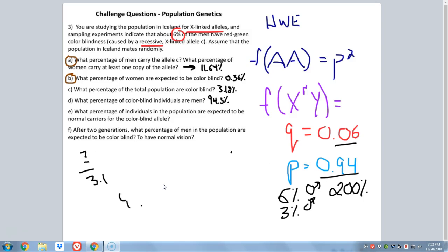What percentage of individuals in the population are expected to be normal carriers for the colorblind allele? So men can't be carriers. Men either show the trait or they don't. And colorblind women aren't carriers either. The only carriers we have are the heterozygous women. These are our normal carriers. They can see color normally, but they're carriers. When we already did this math, unfortunately I erased it, so we'll have to redo it again. But Hardy-Weinberg says any heterozygotic condition is going to be equal to 2pq. In this case, that's equal to 2 times 0.94 times 0.06. So 2 times 0.94 times 0.06 gives us 11.28% of the population are carriers.